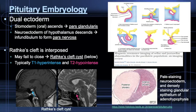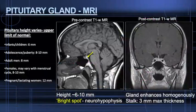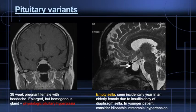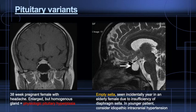When fusion is incomplete, a remnant along Rathke's cleft may be left behind as a Rathke's cleft cyst, with classic T1 hyperintense and T2 hypointense appearance. Normal pituitary MRI shows the expected hyperintense signal of the neurohypophysis or 'bright spot' on non-contrast sagittal T1, and homogenous symmetric enhancement of the gland with a thin midline stalk on post-contrast coronal imaging. Height of the pituitary gland varies greatly with age, gender, and with pregnancy or menstrual cycle. An empty sella is often an incidental finding in an elderly patient due to weakening of the diaphragma sellae and CSF pulsation over time; in a younger patient, it may indicate idiopathic intracranial hypertension.